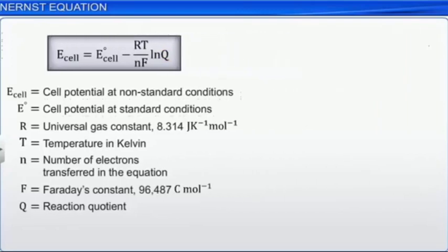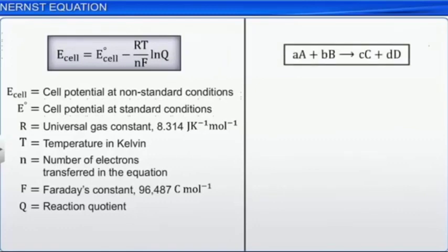To calculate Q, the products are put in the numerator and the reactants are in the denominator. Raise each species to a power equal to its coefficient in the balanced equation. Molarities are used for concentrations as indicated by the square brackets. Remember that concentrations of pure solids and liquids are taken as unity.